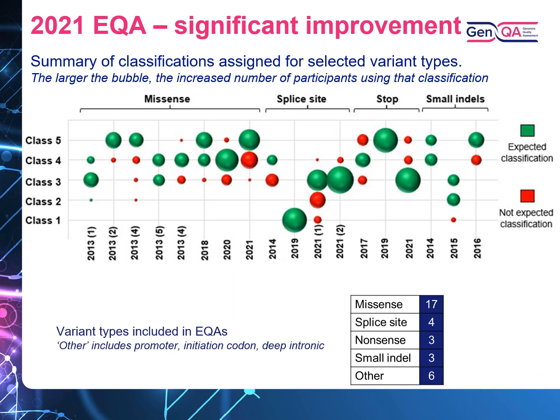Fast forward to several years of GenQA having provided this EQA, and you can see a major improvement. The 2013 variants just discussed are slotted into this bubble plot. However, there are fewer red dots, or at least the red dots are smaller, meaning fewer laboratories have reported an incorrect classification in the more recent years. There are still the odd variants with variation, like 2021 splice sites, but no longer are you seeing a Class 5 being classed as a Class 2, for example.